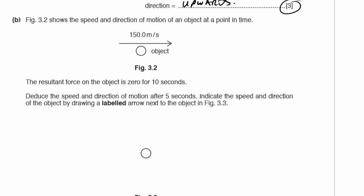Part B shows the speed and direction of an object at a point in time. The resultant force on the object is 0 for 10 seconds. Deduce the speed and direction of the motion after 5 seconds. No resultant force means no change in motion, so it's exactly the same as above.